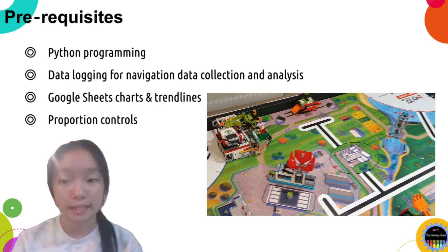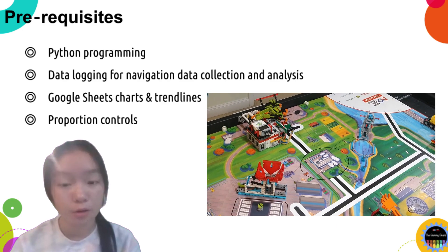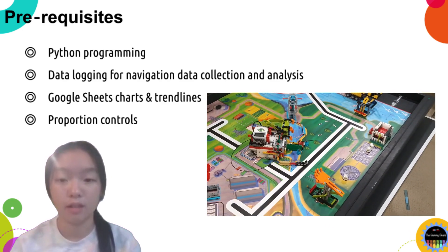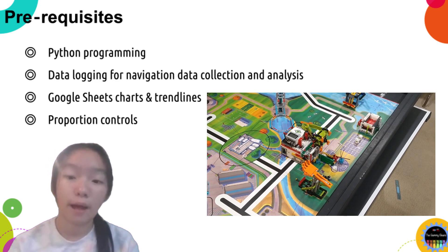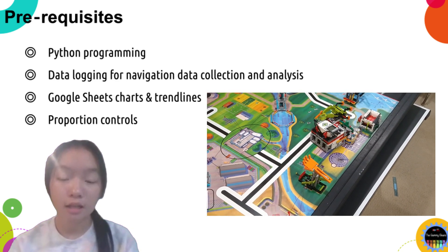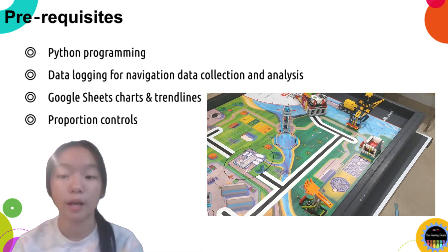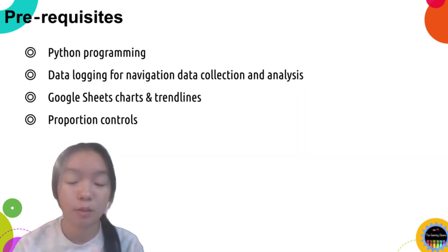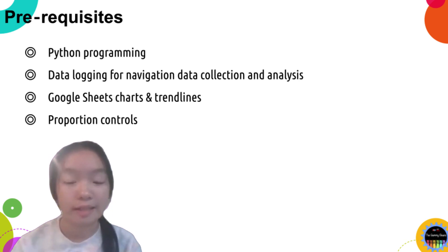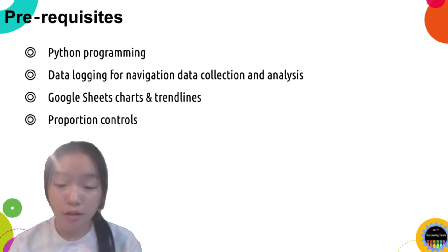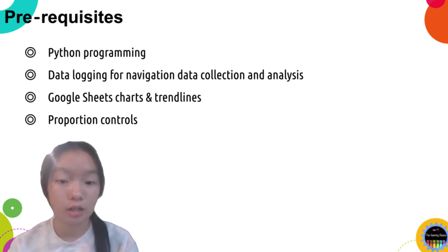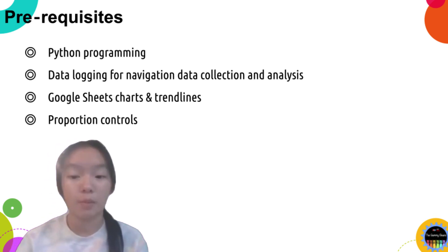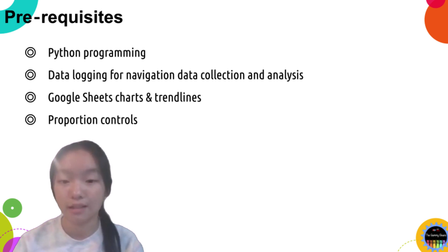However, before we dig into the details, I want to mention that this approach, even though it's very basic, it does require a bit of advanced knowledge. You'll need to know Python for robot programming, and you should be able to apply proportion controls for the robot navigation. You'll need to know data logging to help you record robot navigation data and use it for analysis. You'll also need to know how to use Google Sheets to import data, create charts, and use trend lines for data fittings. I'll show you a simple example with step-by-step explanations in the next few slides.